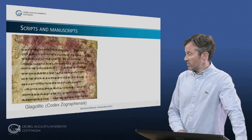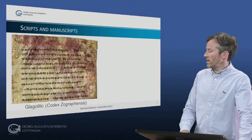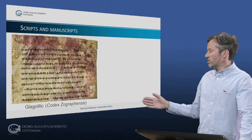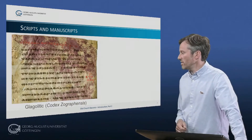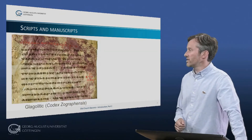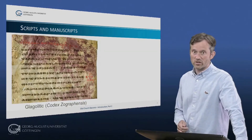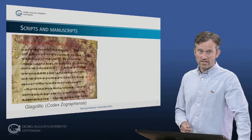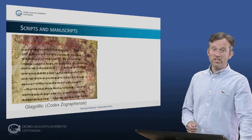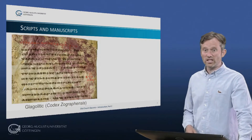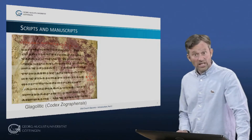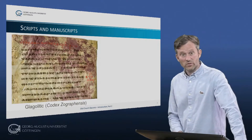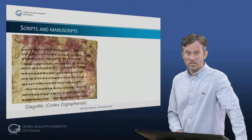Here is a picture showing a page from an Old Church Slavonic manuscript. It's the manuscript known as the Codex Zographensis, which is written with a so-called Glagolitic script. As you can see, it looks very different from most modern scripts.